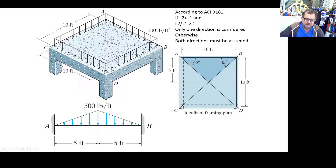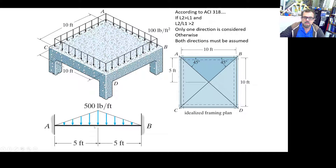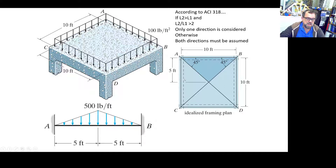Since everything is cast in place and monolithic, this is a perfect moment-transfer connection — assume it's a frame or fixed-fixed connection. The load value: 100 pounds per square foot multiplied by the height of 5 gives 500 pounds per foot. That's how you get 500 lb/ft in this direction.